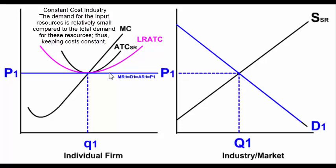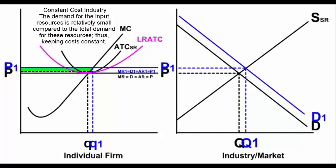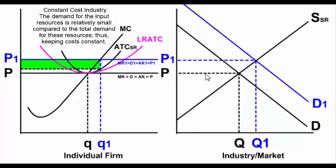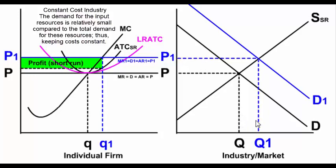Since an individual firm is a price taker, it will take this new market price. So as demand increases, price in the industry increases and quantity increases. The individual firm must take that equilibrium price, and the quantity of the individual firm increases to where the new MR1 is equal to MC and the price is higher for the individual firm.